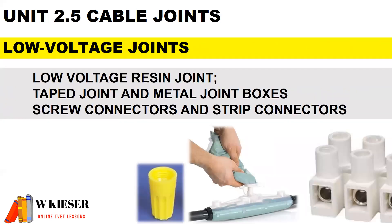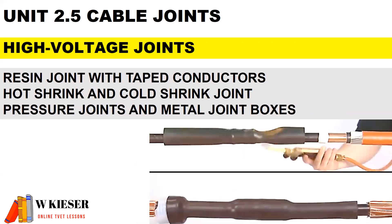For low voltage joints, we get the low voltage resin joints, tape joints and metal joint boxes, screw connectors and strip connectors. For high voltage joints, we get resin joints with tape conductors, hot shrink and cold shrink joints, pressure joints and metal joint boxes.